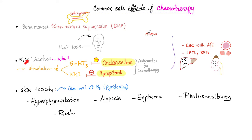How can I give the patient chemotherapy and protect the patient from nausea and vomiting? You can give an anti-emetic with the chemotherapy. Options include ondansetron, which is a serotonin receptor antagonist — specifically a 5-HT3 receptor antagonist. Or you can try aprepitant, which works on the NK1 receptor — and NK1 stands for neurokinin-1, not natural killer cells.